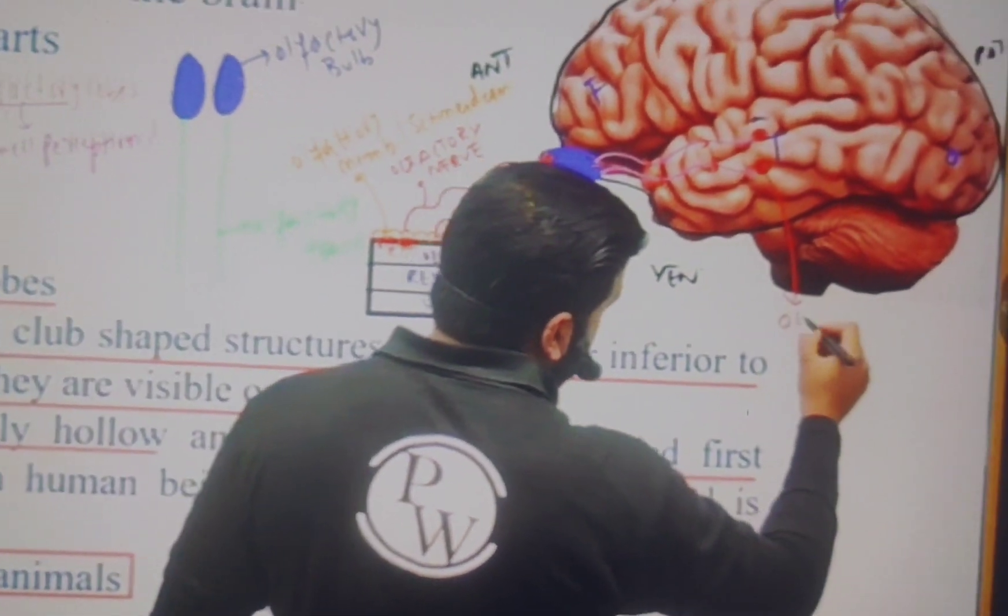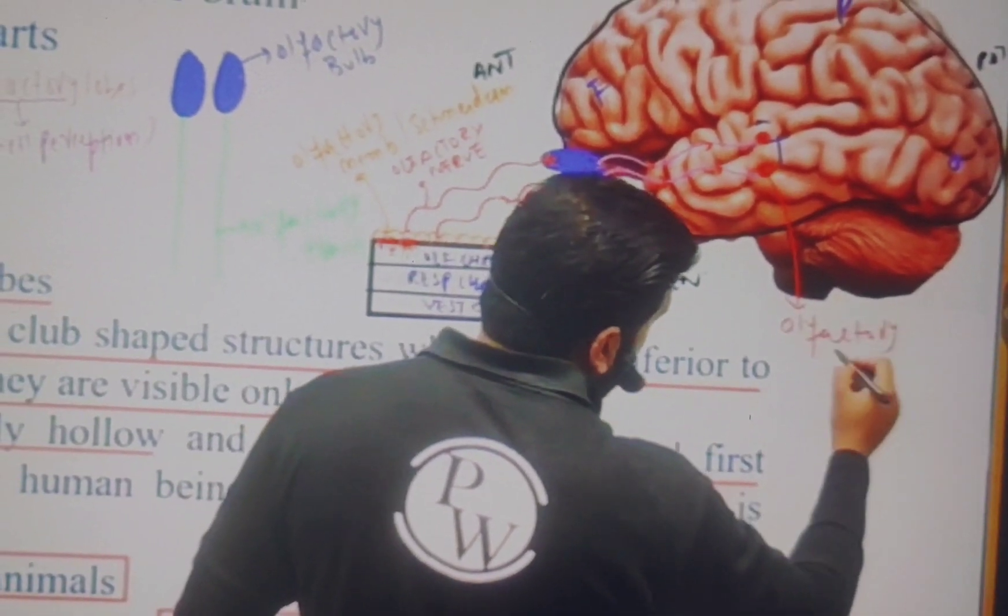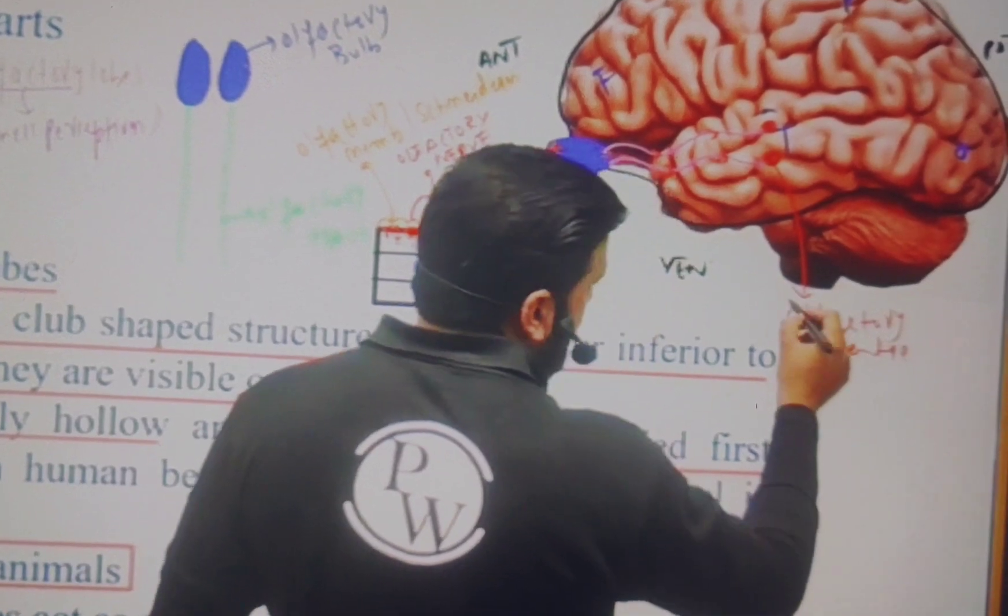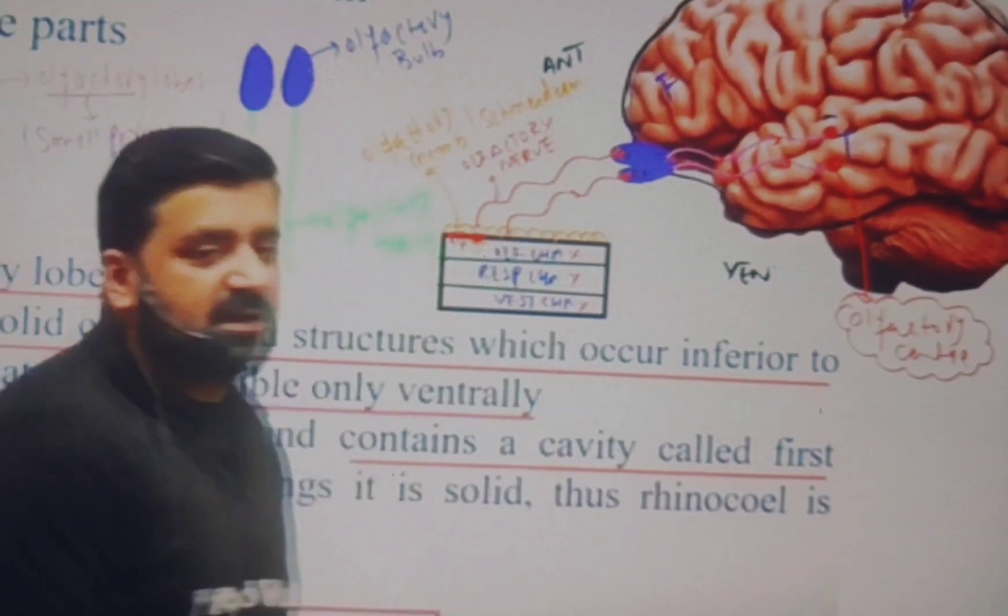What do you find in a temporal lobe? You find an olfactory center or olfactory area. And this olfactory center or olfactory area tells you what you used to use.